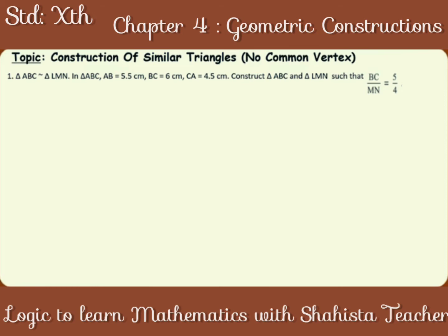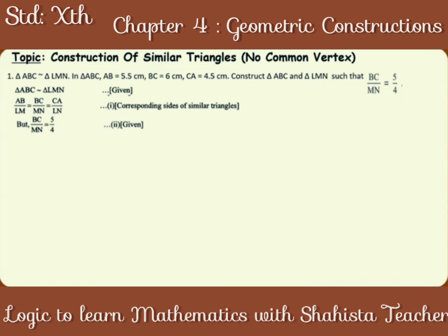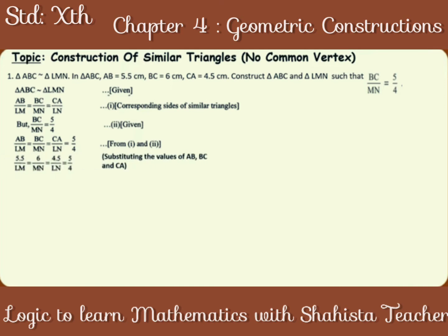Analysis: Triangle ABC is similar to triangle LMN (given). So, AB upon LM is equal to BC upon MN is equal to CA upon LN, by corresponding sides of similar triangles. But BC upon MN is equal to 5 upon 4, which is given. So, AB upon LM is equal to 5 upon 4. Therefore, 5.5 upon LM is equal to 6 upon MN is equal to 4.5 upon LN is equal to 5 by 4, substituting the values of AB, BC and CA.